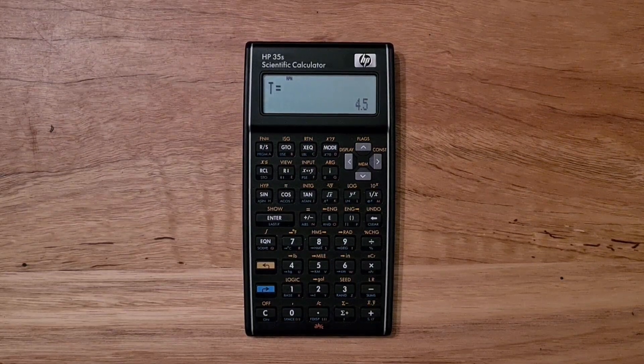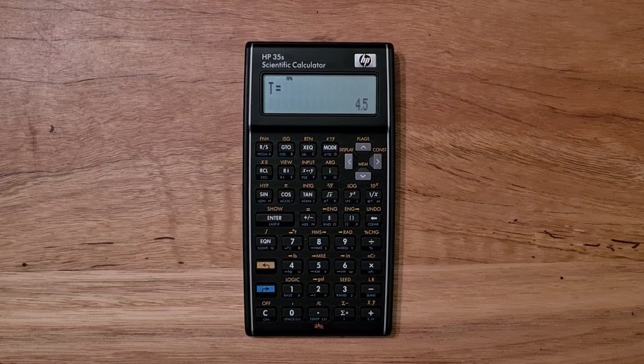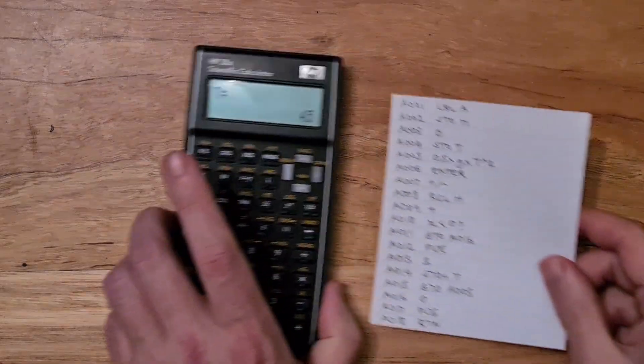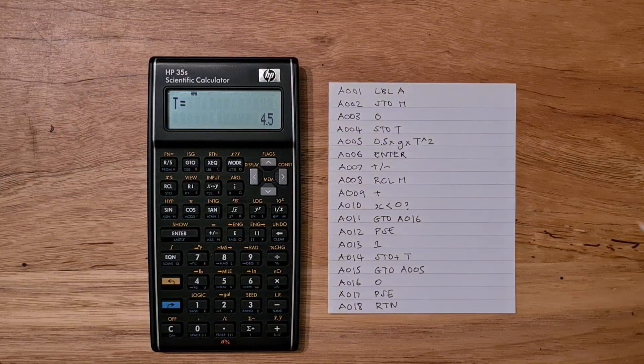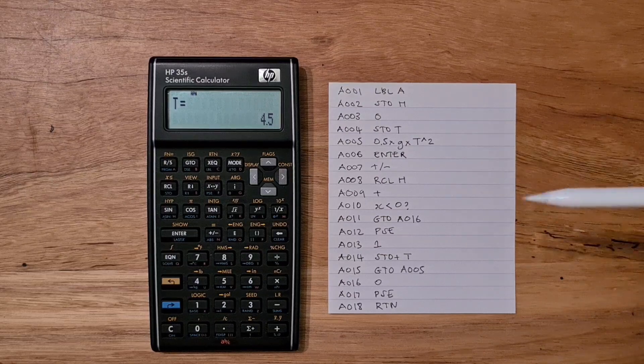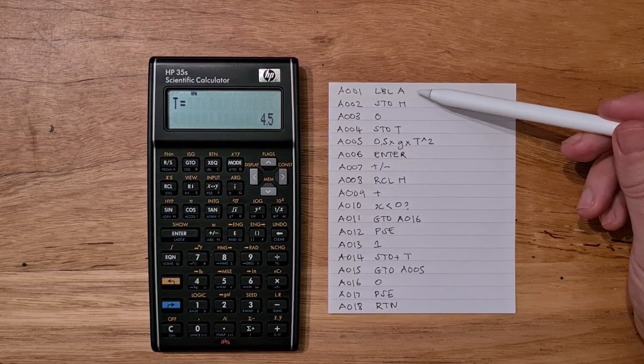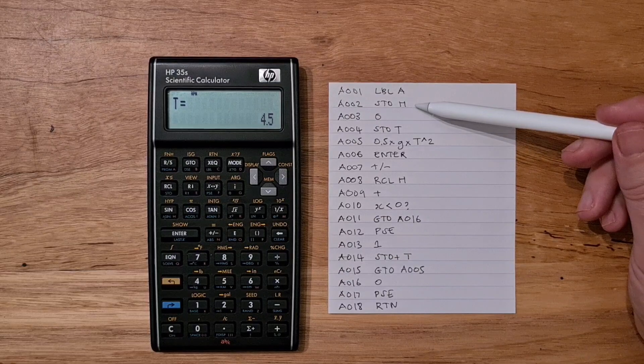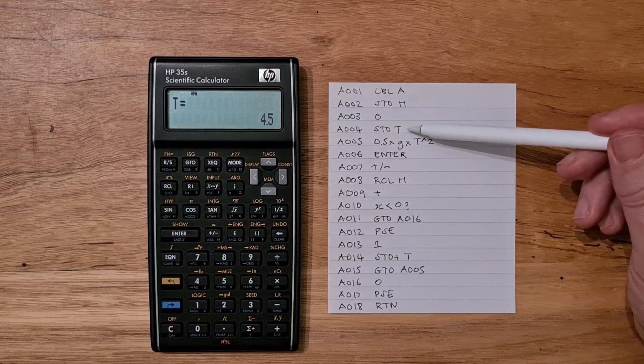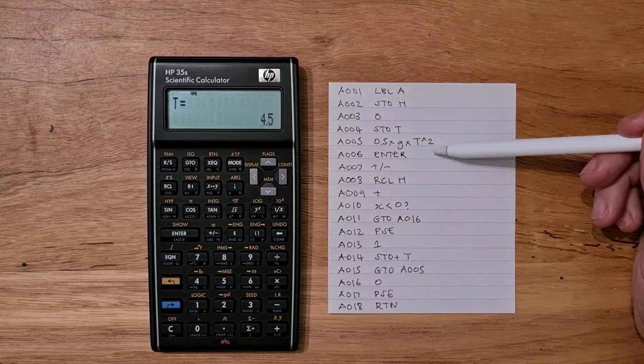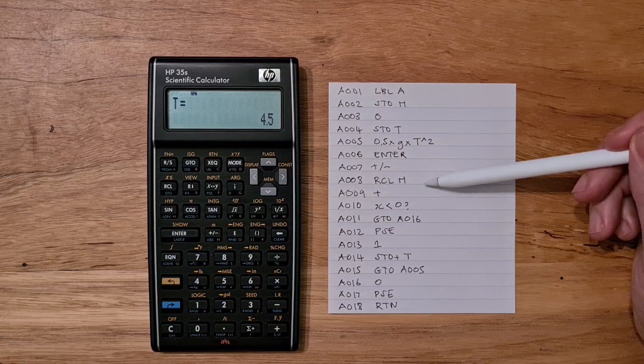The 35S also supports keystroke programming to extend the functionality of the calculator. Like with the 33S and 32S2, you can link equations to keystroke programs, which is quite powerful. This program creates a loop around the formula we just entered. It starts by creating a label A for the program, stores the X register into H, which is a height, and starts off with a time of zero and stores that in T, and then calculates the distance that the object falls within T seconds and subtracts that from the original height.